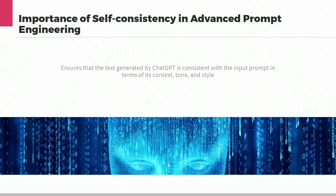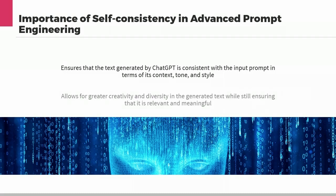Self-consistency is a technique used to ensure that the text generated by ChatGPT is consistent with the input prompt in terms of its context, tone, and style. This technique is essential to improve the overall quality of the generated text and to prevent the generation of irrelevant or nonsensical responses.